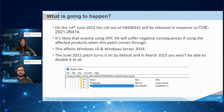It's likely that anyone using OPC DA will suffer negative consequences if they're running System Platform or Wonderware/the Edge and this patch comes through. This affects Windows 10 and Windows Server 2019. In June 2021, Microsoft delivered a security update that added a registry key that enabled the hardening of DCOM as provided in the KB. The key was set to zero, or disabled, when this update went live.